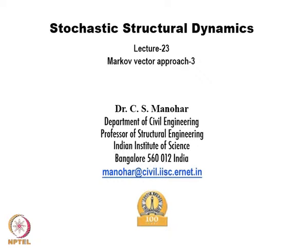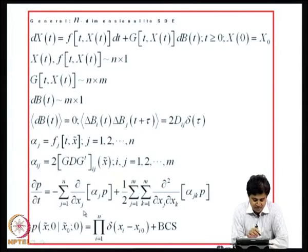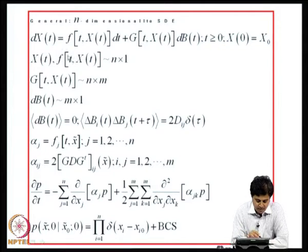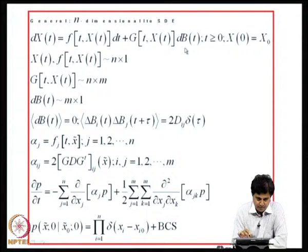In the previous lecture, we explored how to use the Markov property of response processes associated with dynamical systems driven by white noise excitations. We considered differential equations governing dynamical systems and cast them in the form of Ito stochastic differential equations. For an n-dimensional dynamical system, F is the drift vector, G is the diffusion matrix, and dB represents increments of Brownian motion processes. The formal derivative of a Brownian motion process can be interpreted as Gaussian white noise.